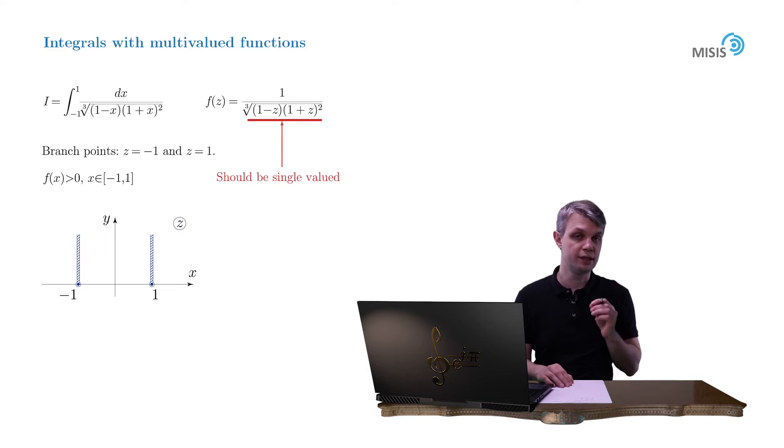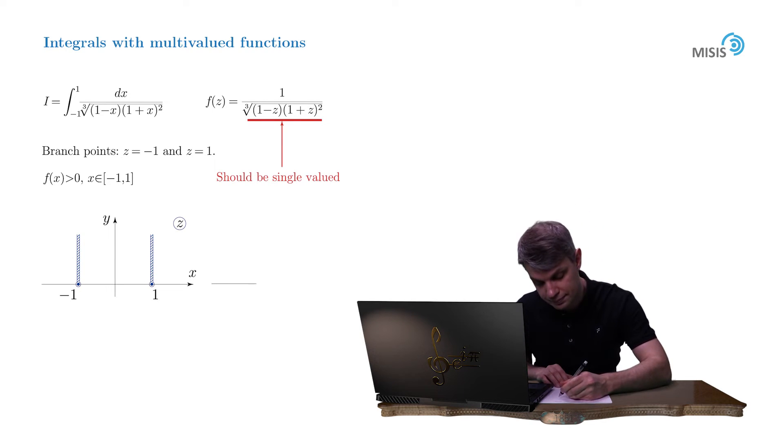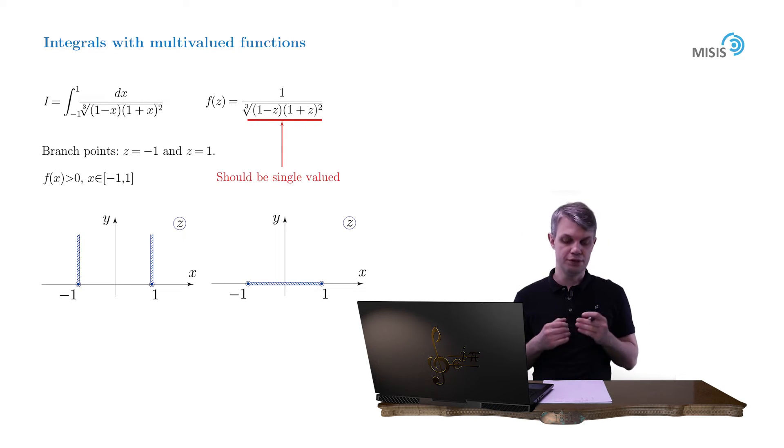Or we can draw a single branch cut connecting the branch points from negative 1 to 1. So which one to choose?